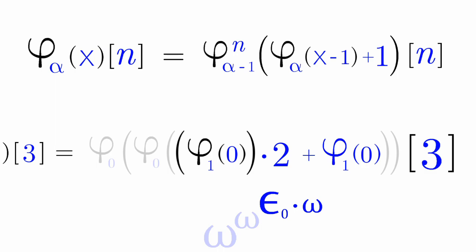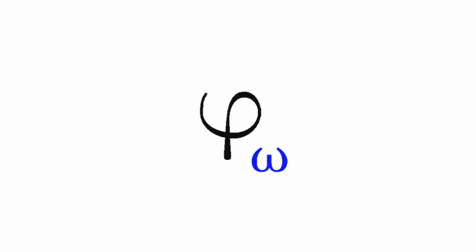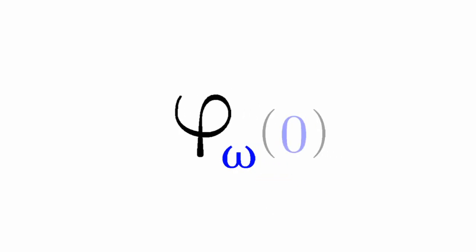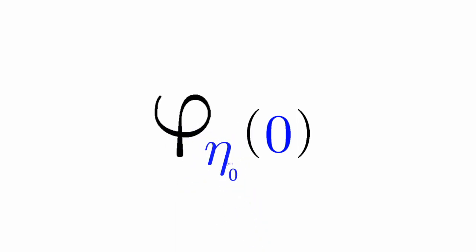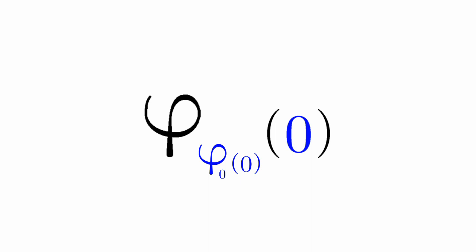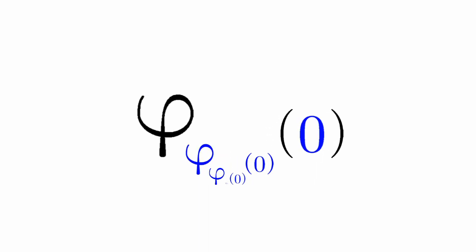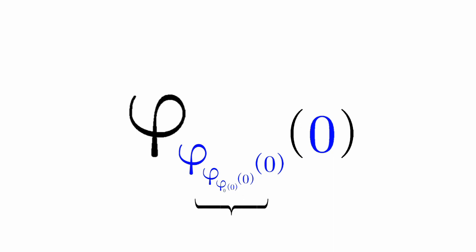I forgot to mention, but we can even have Phi Omega. We can also have Phi Epsilon 0, Phi Zeta 0, Phi Eta 0. We can even have an index of Phi 0 of 0. We can even nest Phi functions like this an infinite number of times.